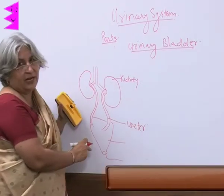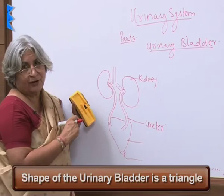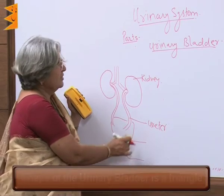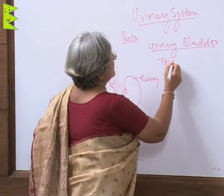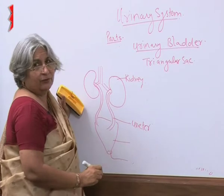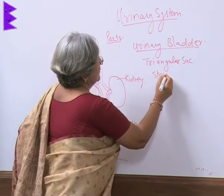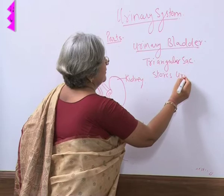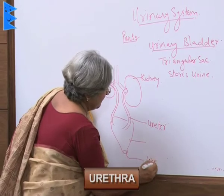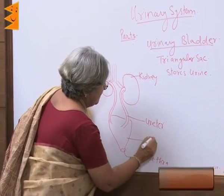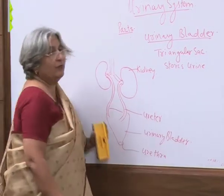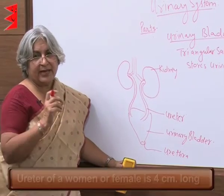Notice the shape of the urinary bladder — it is broad at the top and tapering at the tip, so we can say it is a triangular sac. It stores urine. At its tip there is an aperture called the urethra through which urine is passed out.